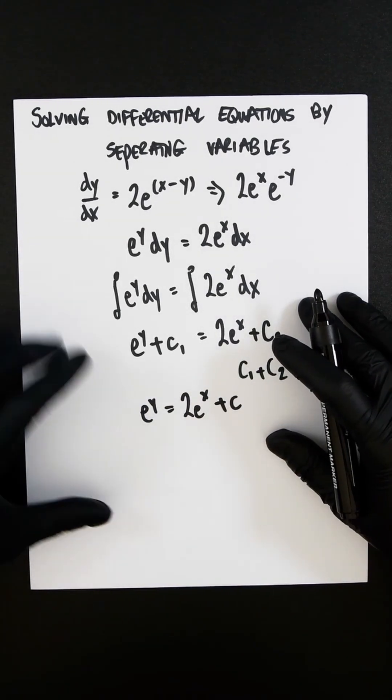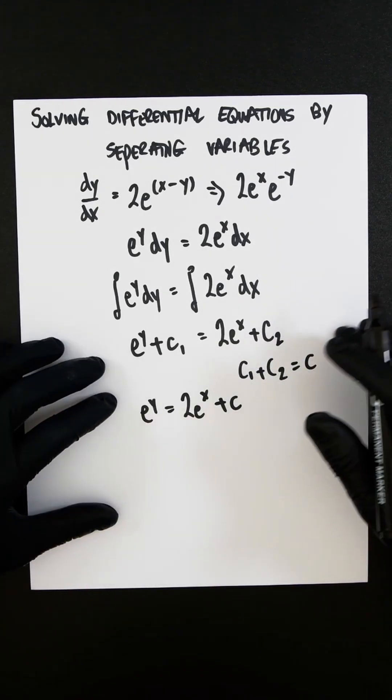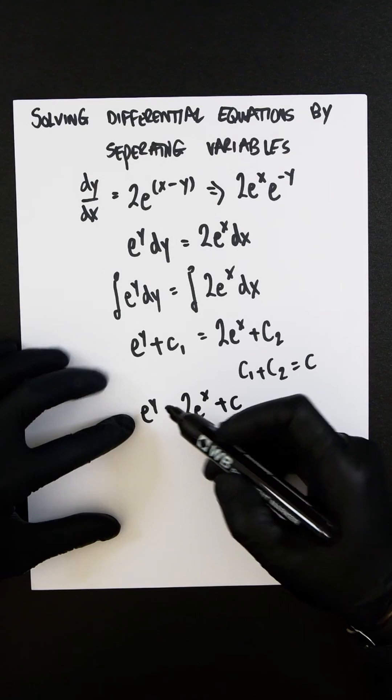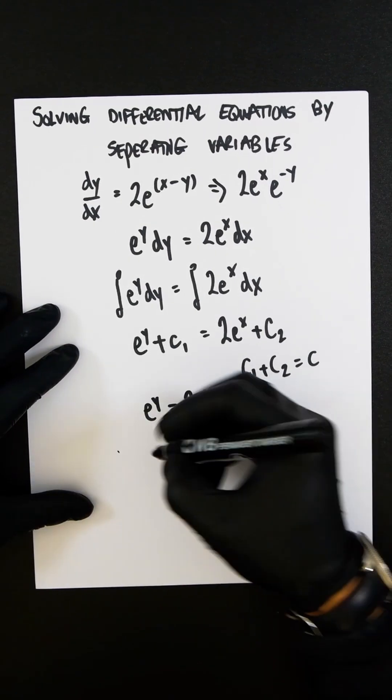But we want to have y by itself, so we can multiply ln in. ln(e) becomes 1, and then the rule is you can bring the y down. So let's multiply both sides by ln.